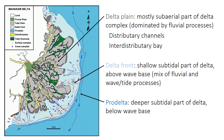The shallow marine part of the delta, here shown in the light blue color, which is above wave base, is called the delta front. The deeper part, shown here in blue down to about 50 meters or so, is called the pro-delta. It's below wave base — the more distal, deeper subtidal facies.